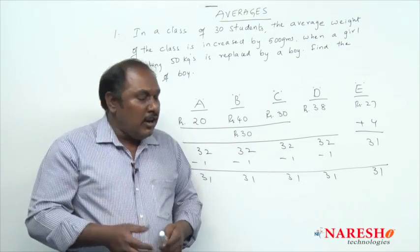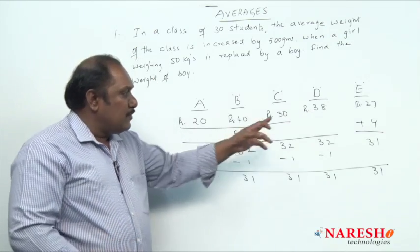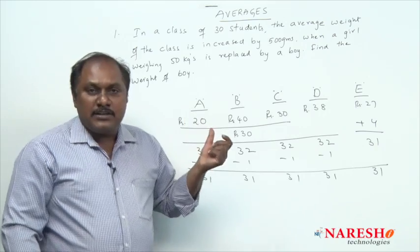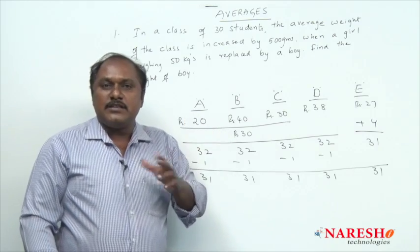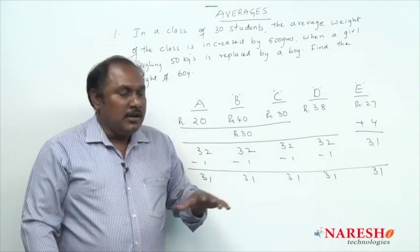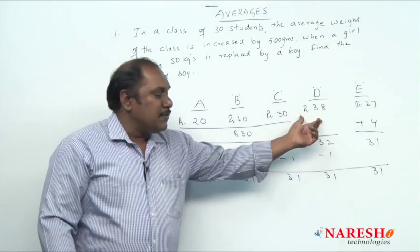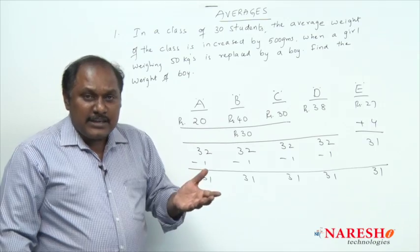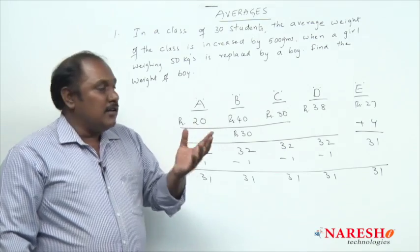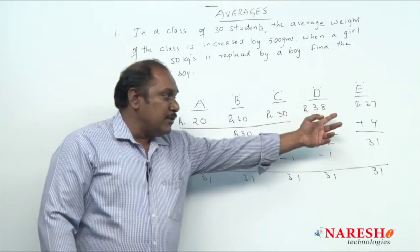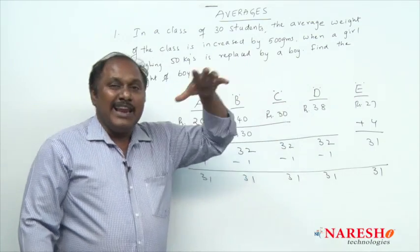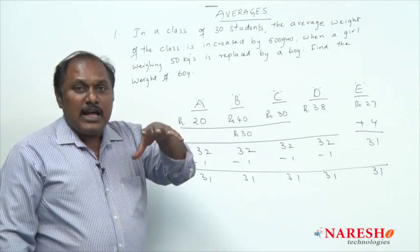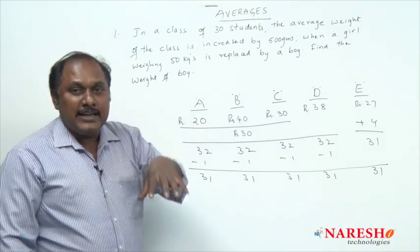To recap: if a new observation is the same as the previous average, the average does not change. If a new observation is more than the previous average, the average increases. If a new observation is less than the previous average, the average decreases.